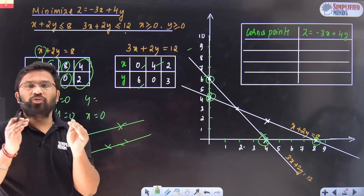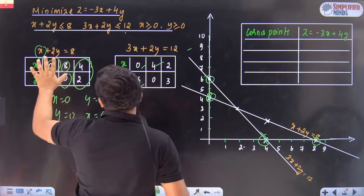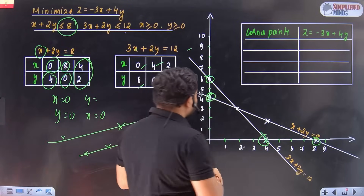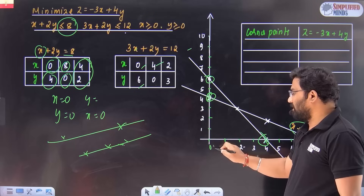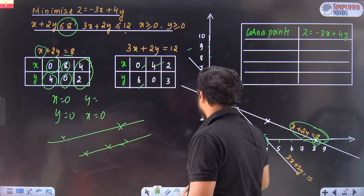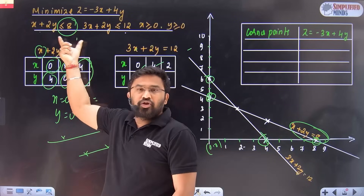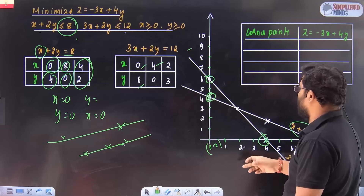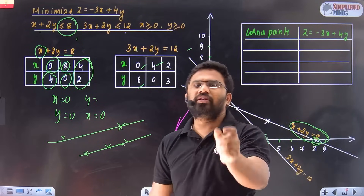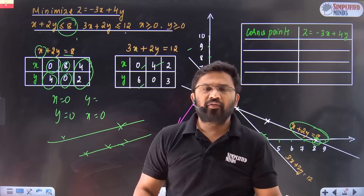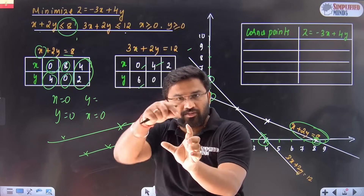Now, how to shade the region — that's very important. The constraint is less than or equal to 8. A very simple method: substitute (0, 0) into the equation. Zero plus zero is zero, which is less than 8 — it is true. That means the solution should contain (0, 0), so you have to shade towards the origin. Rule: substitute (0, 0); if true, shade towards the region containing the origin; if false, shade away.